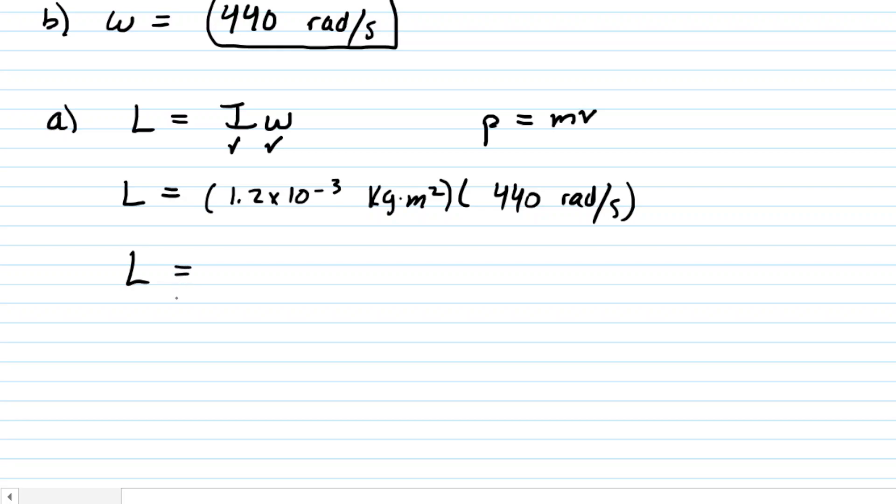Once we compute the angular momentum, we obtain a value of about 0.528. Dimensionally, we're multiplying kilogram meters squared by radians per second. When you multiply by radians per second, the radians essentially cancel. You're left with kilogram meters squared per second. This is the correct answer for the angular momentum in part A.